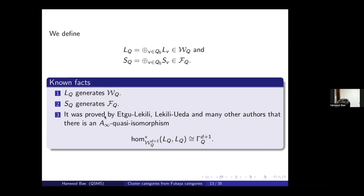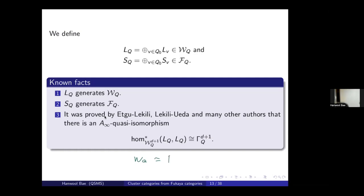Regarding the question of how F_Q sits inside the Ginzburg DG algebra: the wrapped category is quasi-isomorphic to the perfect modules of gamma_Q, and under this identification, the compact category corresponds to the DG modules whose total cohomology is finite-dimensional.